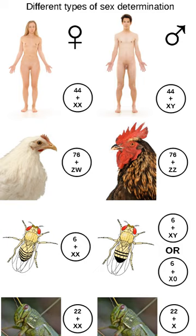In many species, sex determination is genetic. Males and females have different alleles or even different genes that specify their sexual morphology. In animals this is often accompanied by chromosomal differences, generally through combinations of XY, ZW, XO, ZO chromosomes, or haplodiploidy.